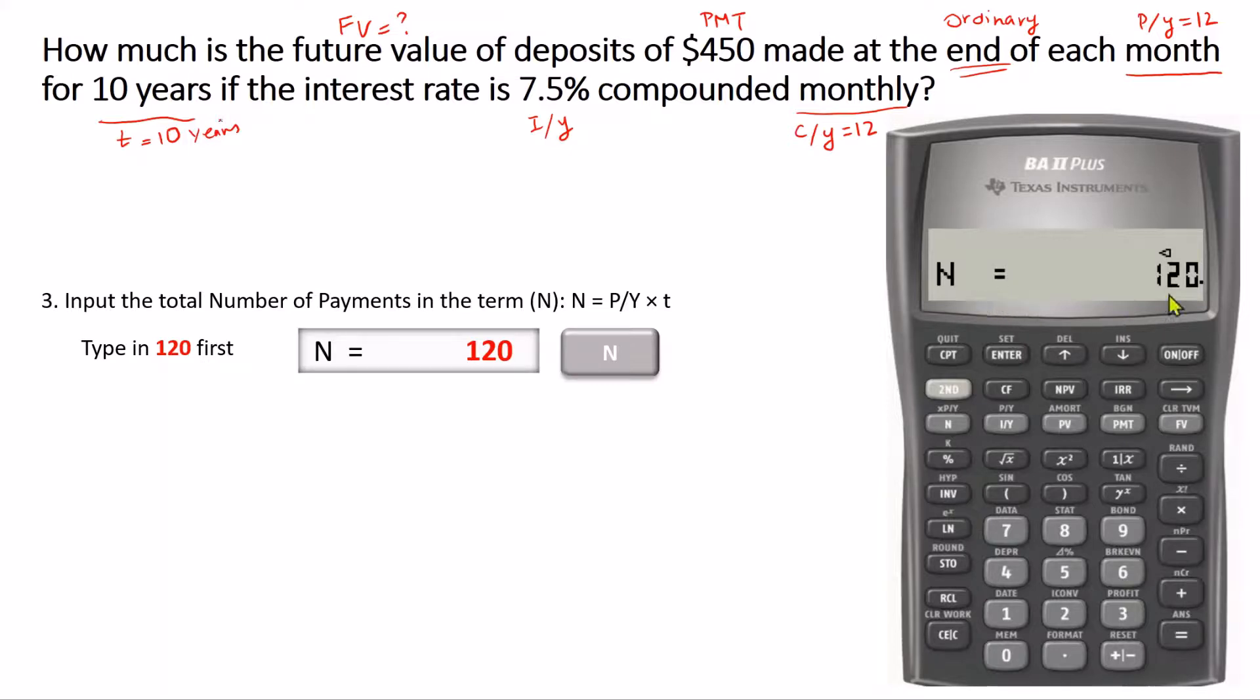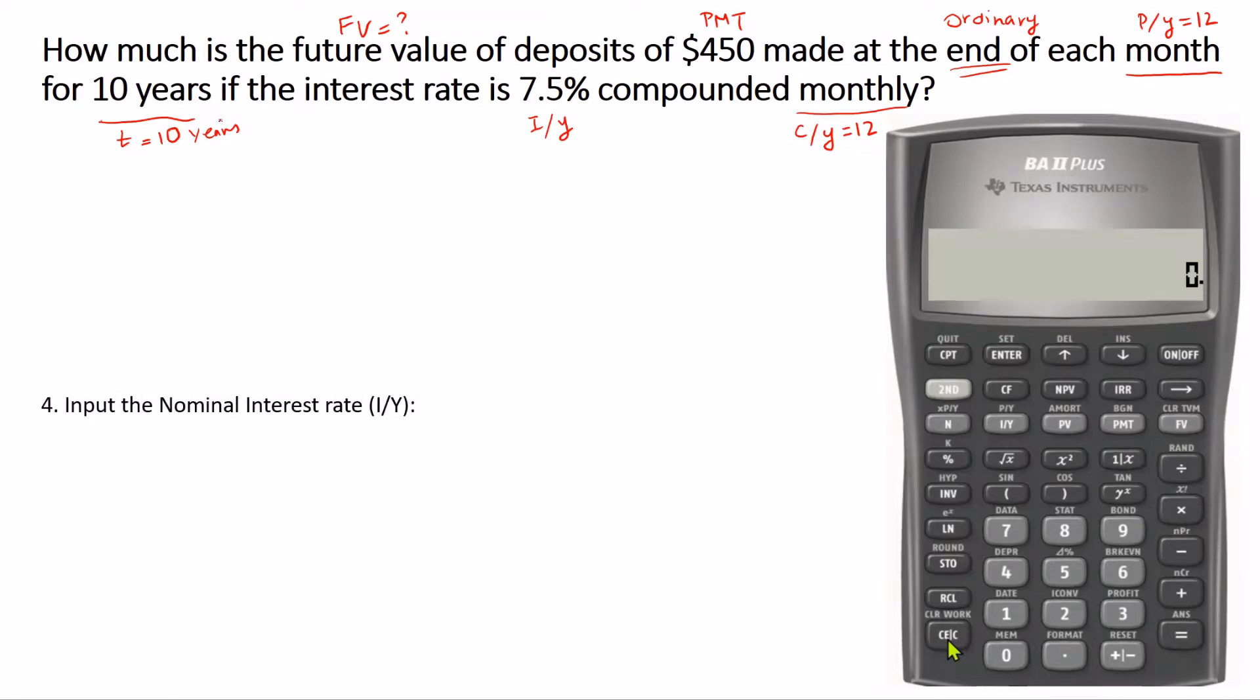Now we press clear and we input the nominal interest rate, which is 7.5. That's the interest rate per year. So 7.5, and you don't have to include the percent symbol, you don't have to convert this to decimal. You just input the rate itself and then press I.